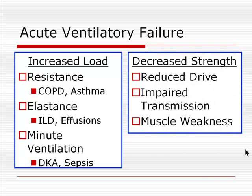Causes of decreased strength include a reduced central nervous system drive, impaired transmission from the spinal cord to the neuromuscular junction, as well as intrinsic diaphragmatic muscle weakness.